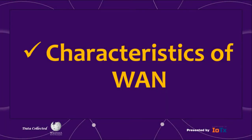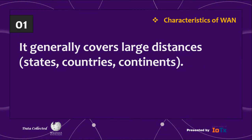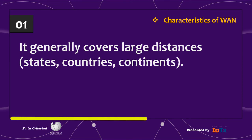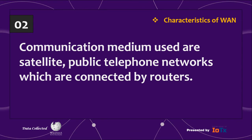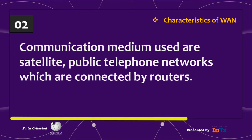Now let's talk about characteristics of WAN. First, it generally covers large distances — states, countries, continents. Number two, communication mediums used are satellite and public telephone networks, which are connected by routers.